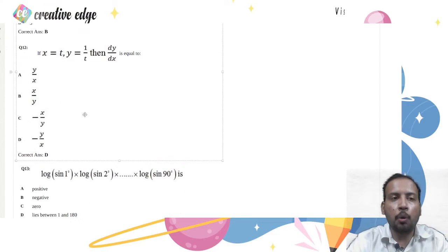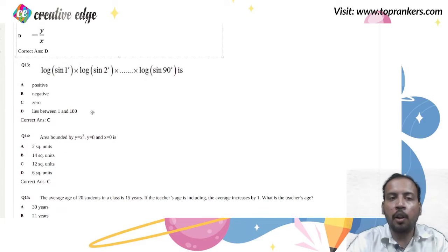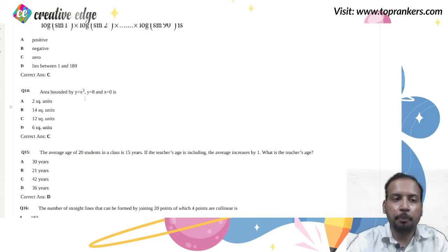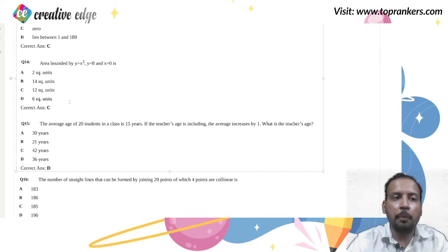Question number 12 is from differentiation, again based on the property of log. This question from integration is area under the curve. A very basic question from area under the curve has been asked.